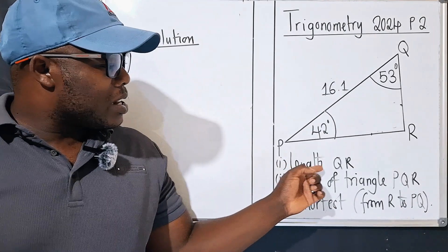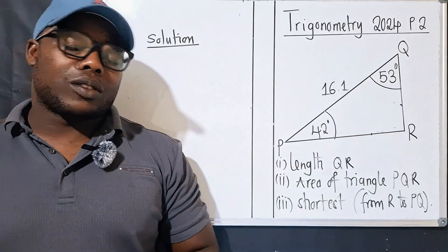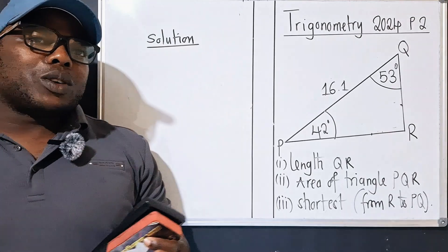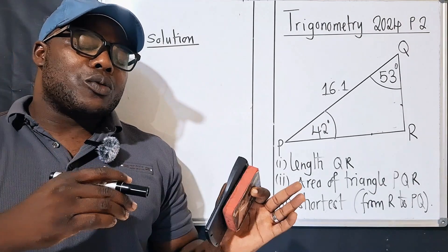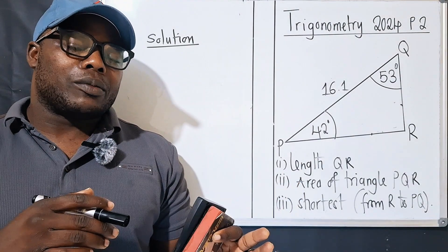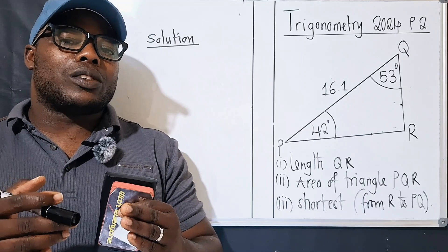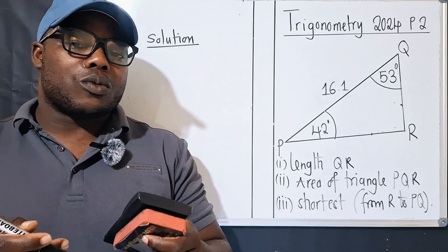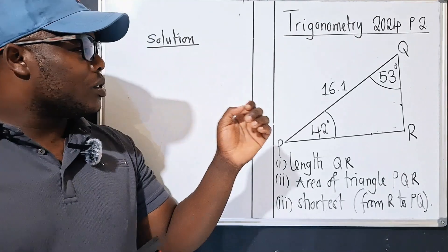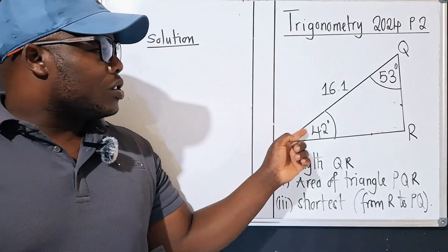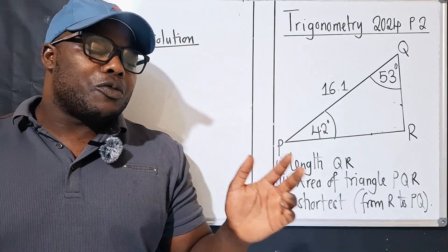To find the length QR, we jump straight to the rule we need here, which is called the sine rule. The reason we use the sine rule is that we have two angles and one side.